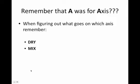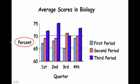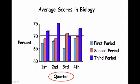Remember that A was for Axis. When you're trying to figure out what goes on which axis, DRY means the Dependent or Responding variable belongs on the y-axis — the thing you are measuring. In this example, I am measuring the percent, which is responding to the change in quarters, so percent goes on the y-axis. MIX means the Manipulated or Independent variable belongs on the x-axis — the thing that you are changing. Quarters change over time, and then I measure the percentages of average scores in biology over those quarters.